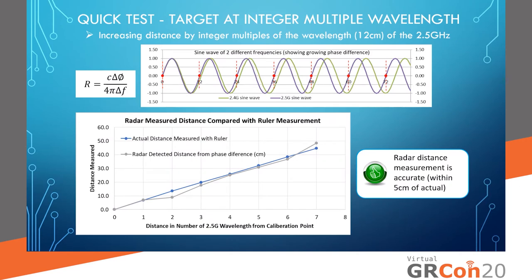The quickest way to test my design was to put the target at integral multiples of one of the wavelengths. That way, one of the sine waves would give a zero phase while the other would give another number, which can be used to calculate the distance. I incremented the target so that the round trip distance increases by one wavelength each time. The results were very good — the actual data and the calculated distance matched up within 5 cm, which is well within my 15 cm expected accuracy.